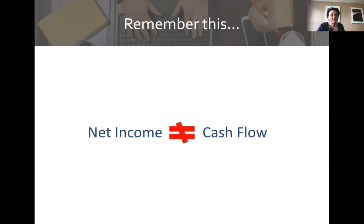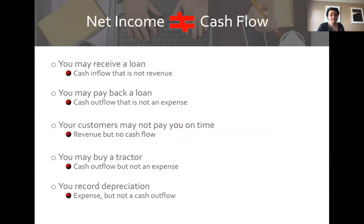Net income does not equal cash flow. Just because you have a positive income doesn't mean you have cash in the bank, and just because you have cash in the bank does not mean you have a positive income. For example, if you get a loan, that's a cash inflow into your business, but it is not revenue and should not show up on your income statement — it will show up on your balance sheet as a liability. As you pay back the loan, you'll have cash flowing out. There are two parts of loan payback: principal and interest. A monthly payment of $1,000 might have $800 going to pay down the loan balance and $200 going to interest. Interest is an expense, but that $800 is not — you're paying down the loan, so you have cash outflow but not necessarily an expense.